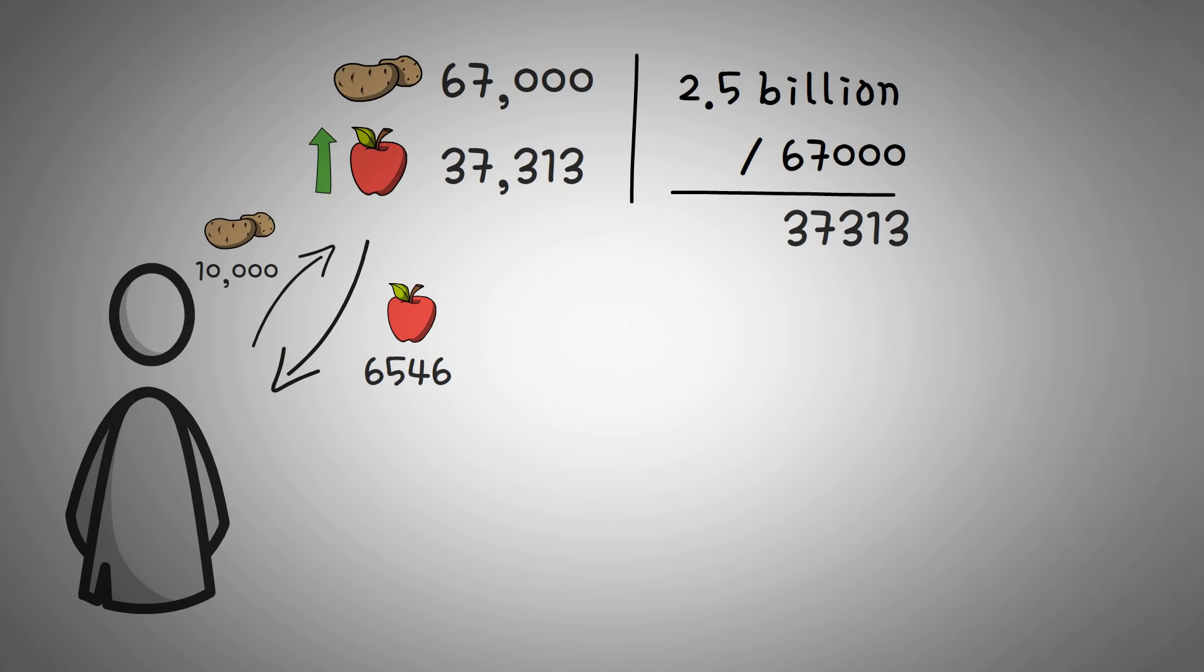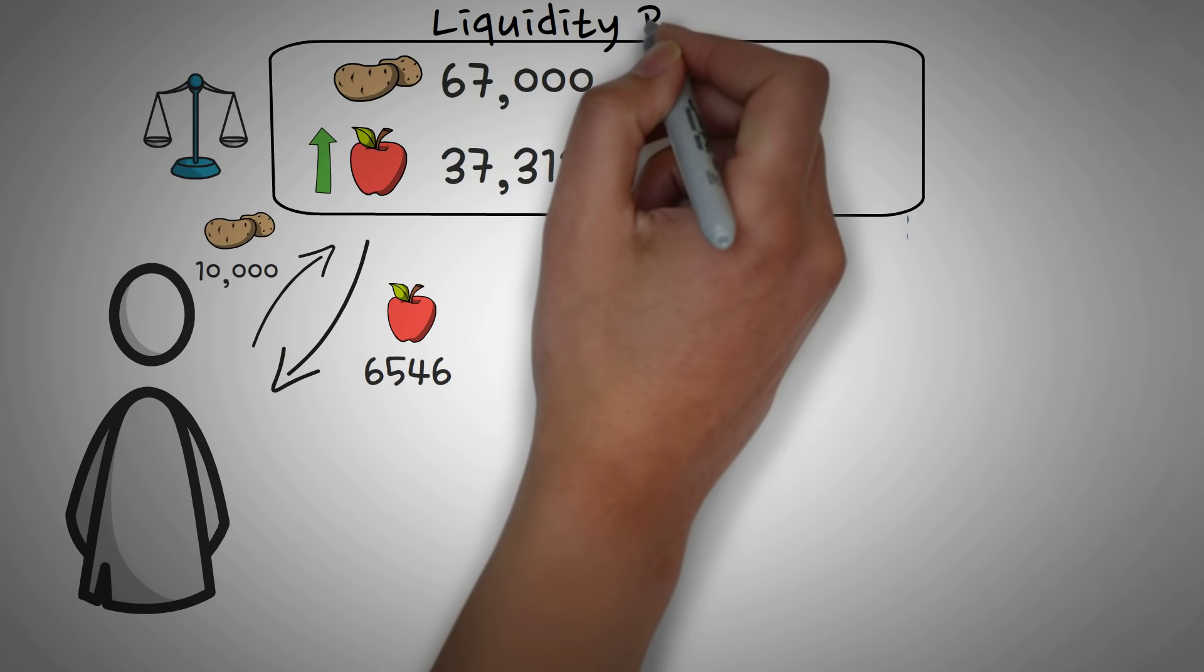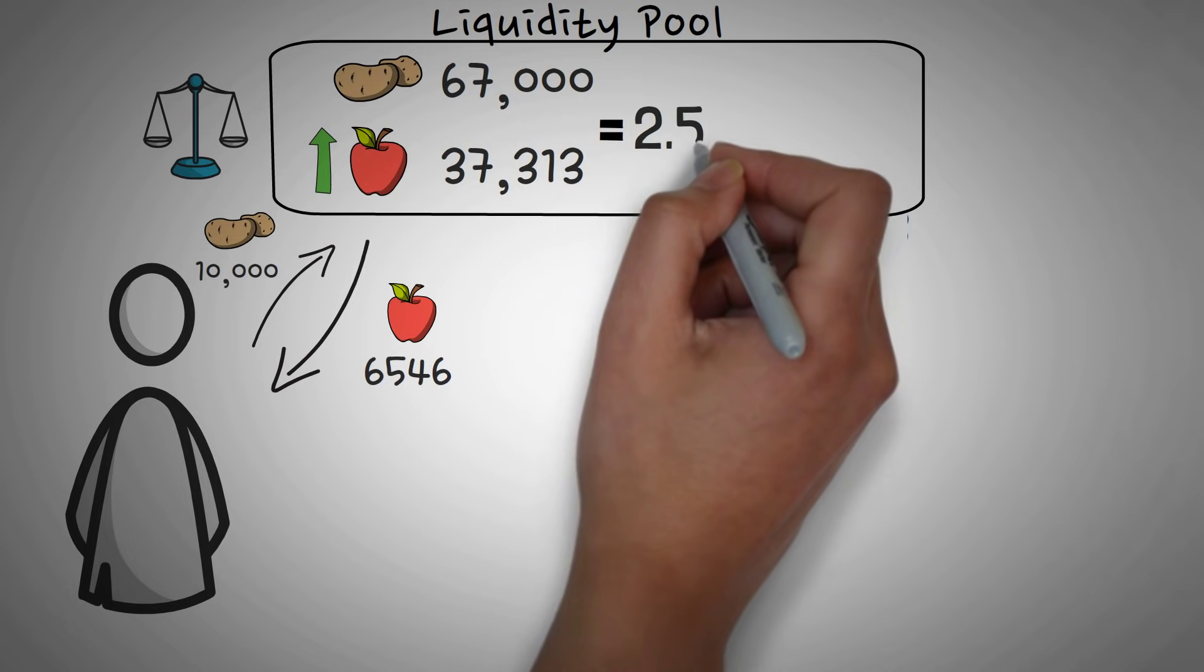This time the potato farmer paid even more for his apples since he kept buying them up. The liquidity pool charges more and more for them, that way it never runs out of stock. The price will exponentially keep going up as he buys more. So now there are 67,000 potatoes and 37,313 apples in our liquidity pool. Both of these numbers multiply to 2.5 billion.